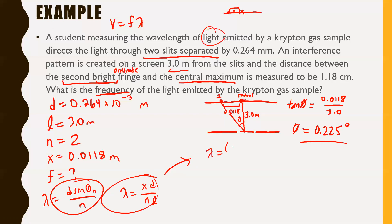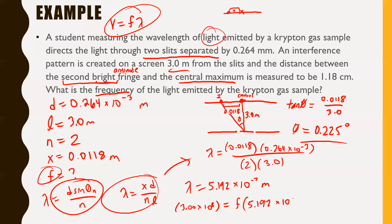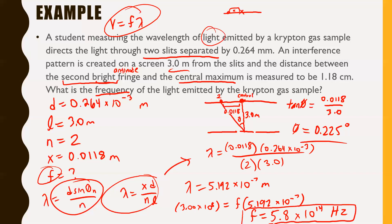So lambda equals X times D over N times L: that's 0.0118 times 0.264 times 10 to the negative 3, divided by 2 times 3.0. Throwing this in the calculator gives lambda equals 5.192 times 10 to the negative 7 meters. But we're looking for frequency, so using V equals F lambda: 3.00 times 10 to the 8 equals F times 5.192 times 10 to the negative 7. Dividing over gives F equals 5.8 times 10 to the 14 hertz. It doesn't matter which formula you use — if you used D sine theta over N you would have gotten the exact same answer.